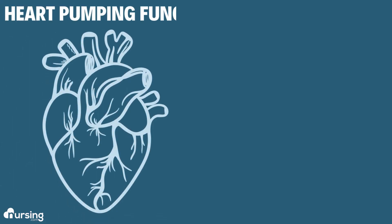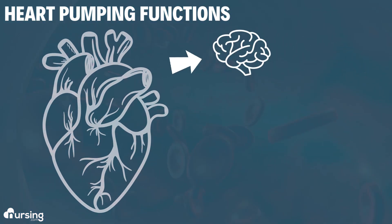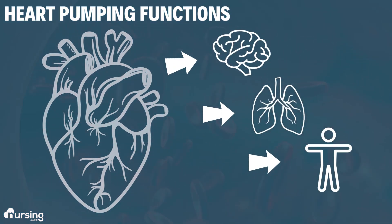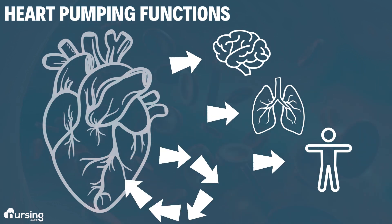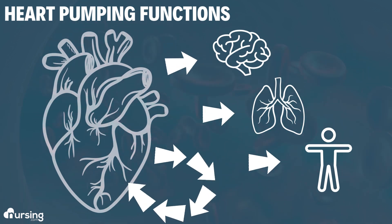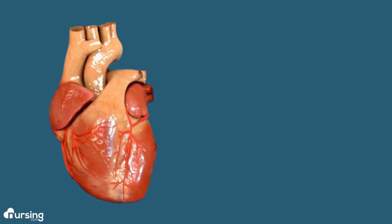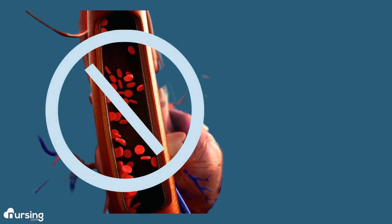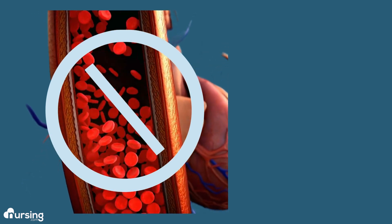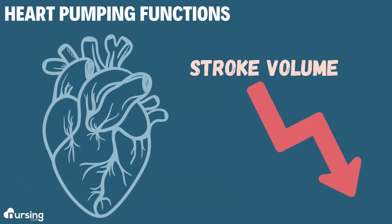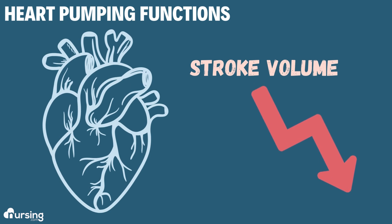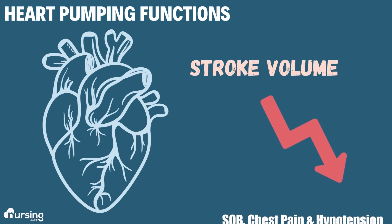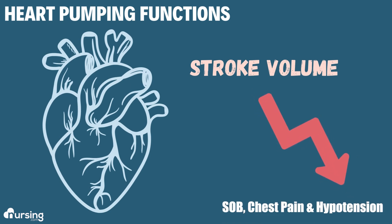Let's look at our heart. The heart is responsible for sending blood to the brain, to the lungs, to the body, and to the heart itself. When the heart is contracting really fast, it does not have enough time to fill up with blood. So if it does not have enough time to fill up with blood, the stroke volume is going to be decreased. This is why people complain of shortness of breath, chest pain, hypotension, and lightheadedness.